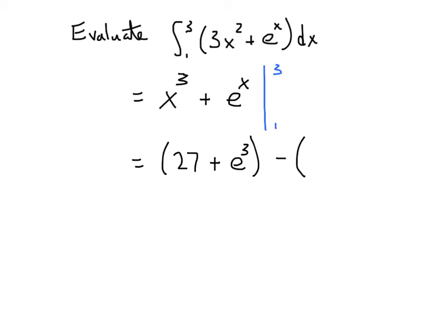We're going to subtract. Plugging in a 1, we get 1 cubed, which is 1, plus e to the 1, which is just e. And so what we end up with is a grand total of 27 minus 1, which is 26. Plus my e cubed. And then it's going to be a minus, because we distribute this minus sign, minus e.